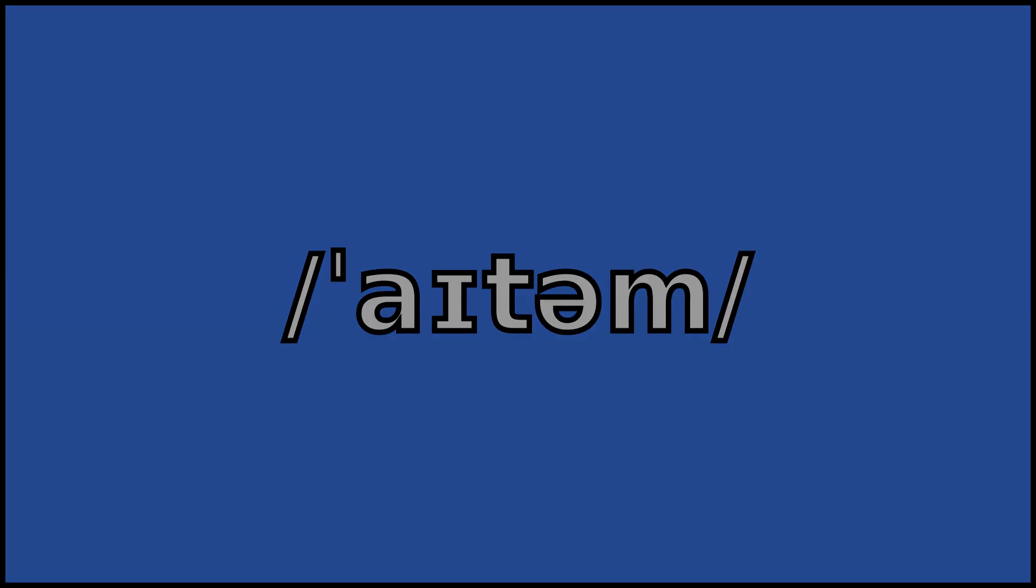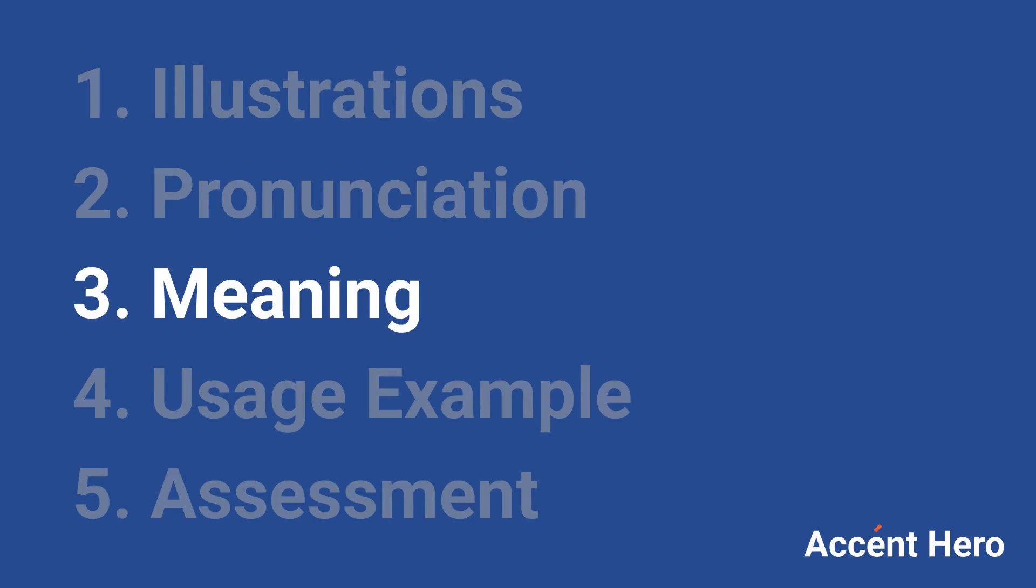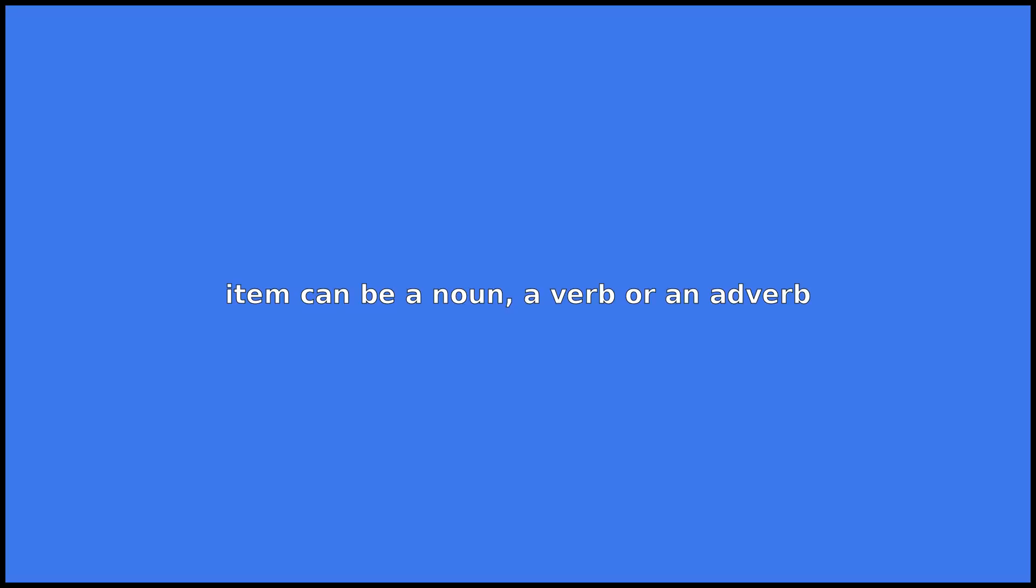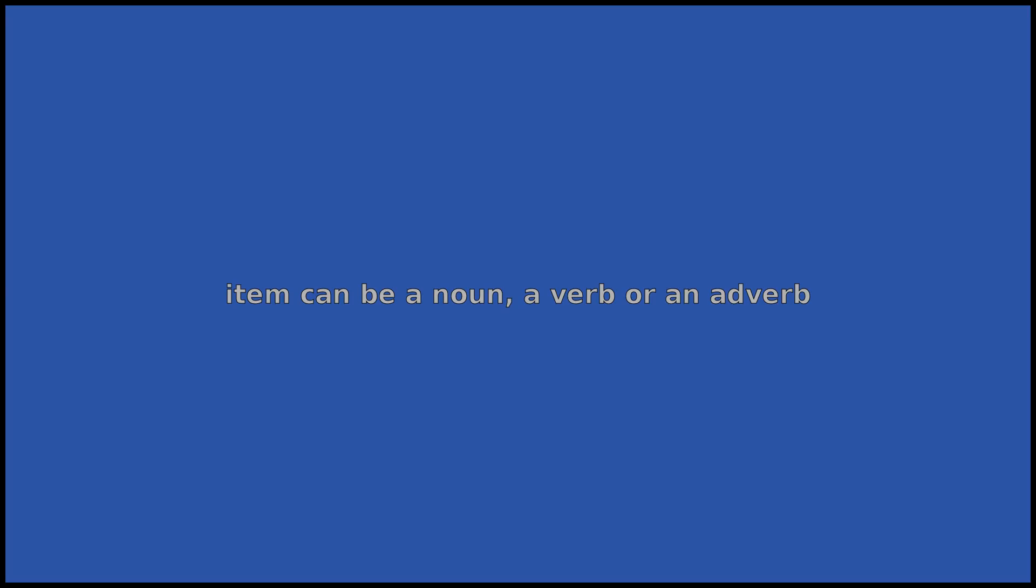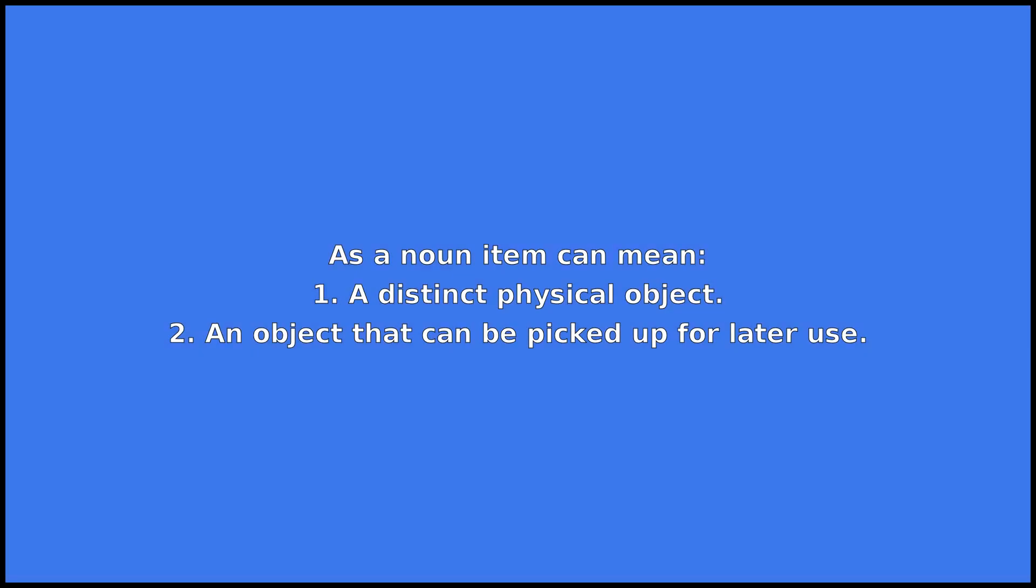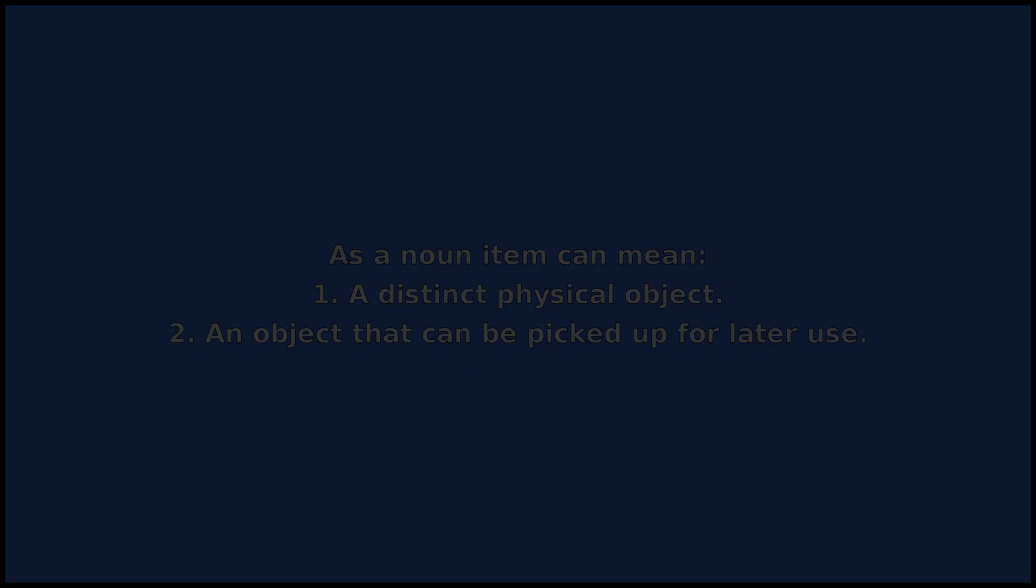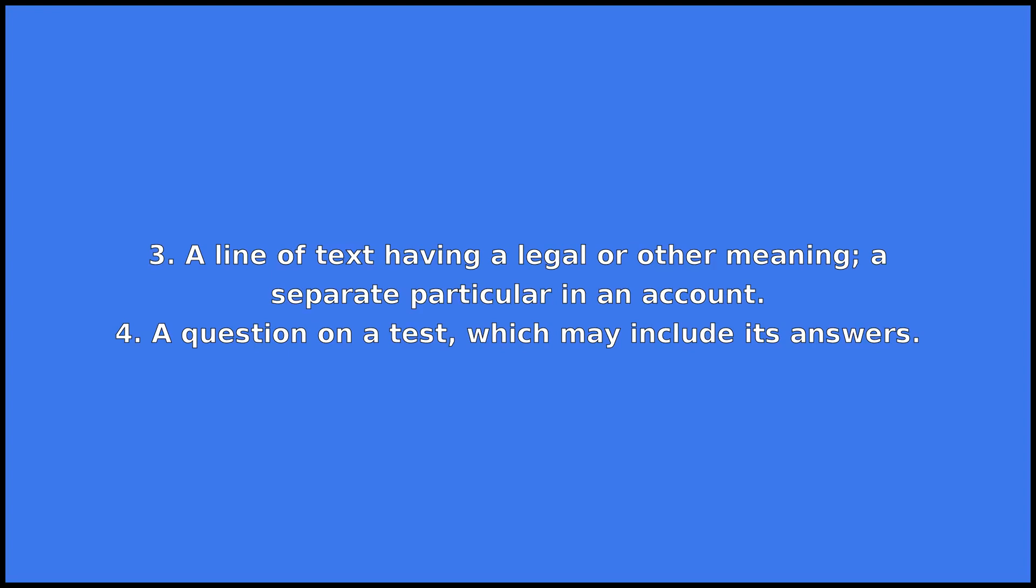Item can be a noun, a verb, or an adverb. As a noun, item can mean: one, a distinct physical object; two, an object that can be picked up for later use; three, a line of text having a legal or other meaning, a separate particular in an account.